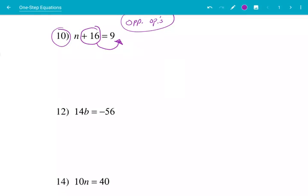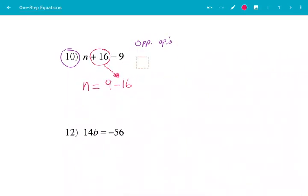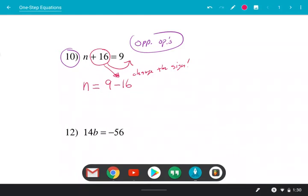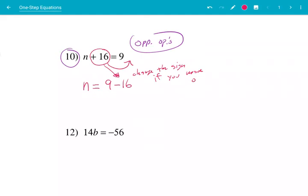But whenever it crosses over this right here, the equals sign, then I have to flip this sign right here. So I'm going to rewrite this. If I want to pull this over to the other side, then I'll rewrite it as n equals 9 minus 16. See how that plus 16 became a minus 16? Change the sign. If you change the sign over the equals sign. So n equals 9 minus 16. Well, 9 minus 16 is a negative 7.